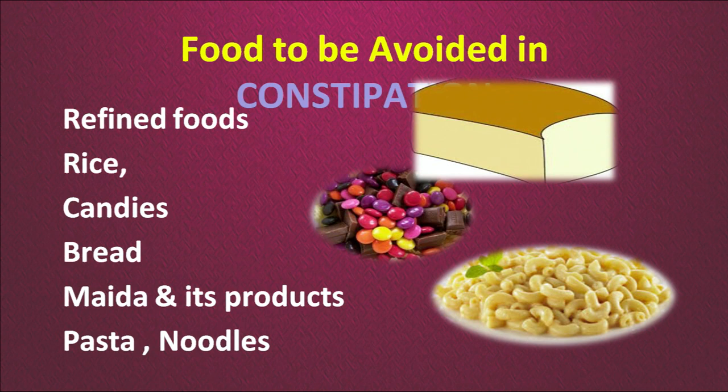What kind of foods should not be added in case of constipation? Refined food, rice, candies, bread, and products made with refined maida such as pasta and noodles should be avoided, because they are made with refined flour.